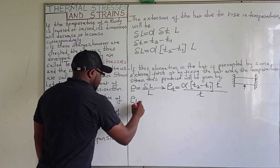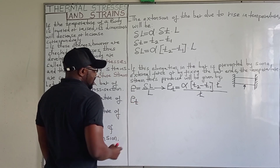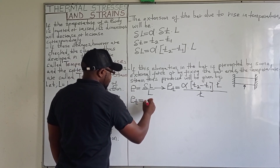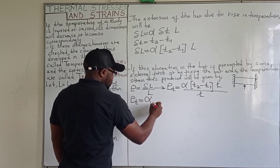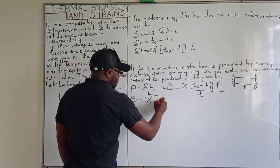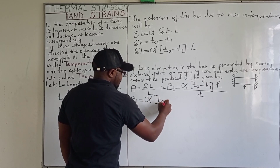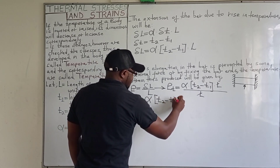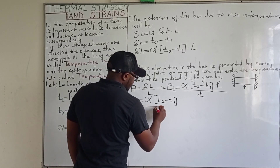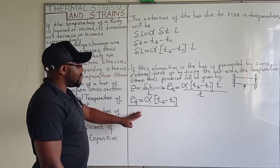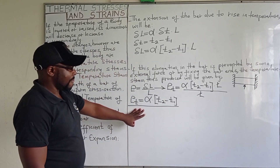This length and this one cancel out. Therefore, the temperature strain will be given by the coefficient of linear expansion of the bar multiplied by the change in temperature. So this is the temperature strain that will be developed.